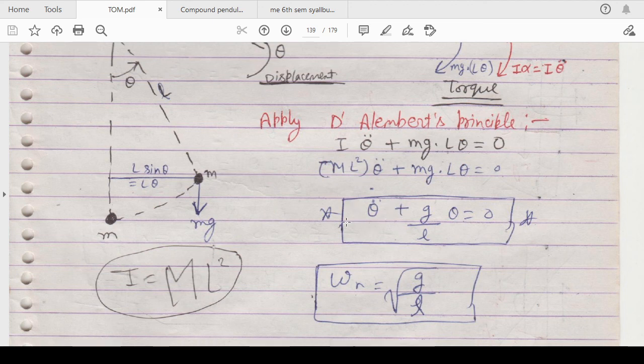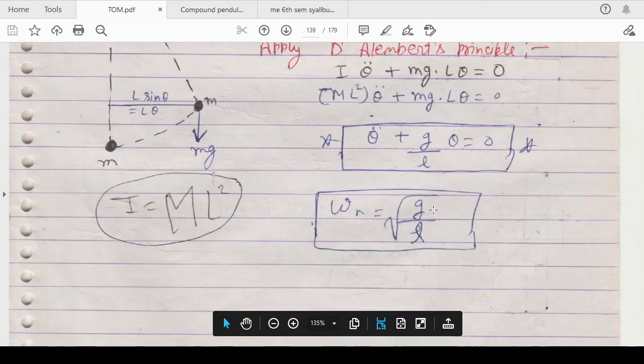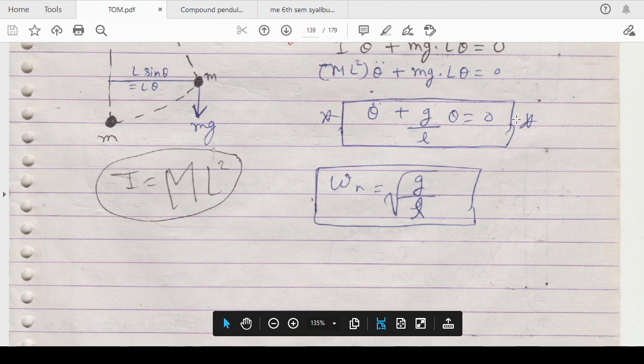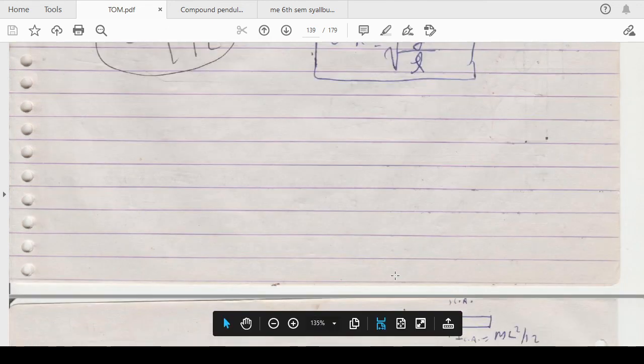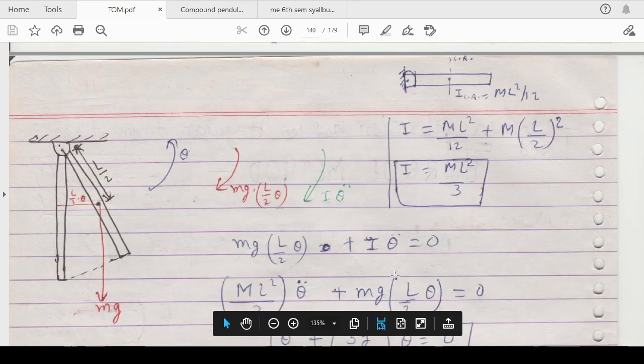As you have seen in the linear vibration equation where it is x double dot plus s/m into x equals zero, in the angular term it is theta double dot plus g/l into theta equals zero. So this angular velocity omega n will be equals to square root of g/l. Similarly you can also apply this at different examples if the center of gravity is located at different parts.